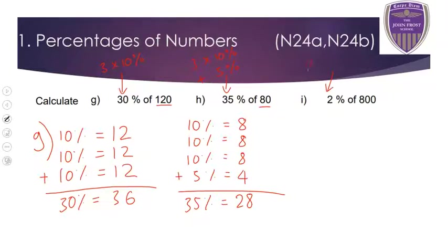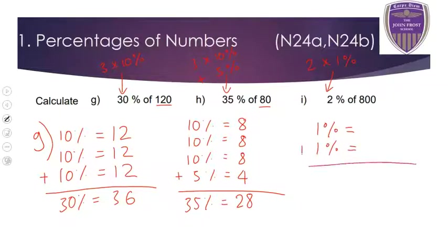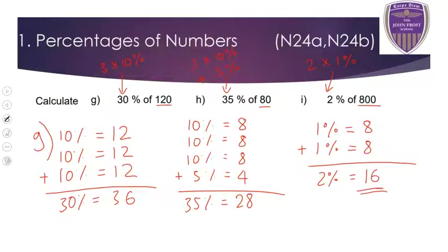For 2%, we do two lots of 1%. Remember, 1% is divided by 100 because there are 100 ones in 100. So do 1% first — 800 divided by 100 is 8. Another 1% is another 8, so 2% is 16. As long as we remember 50%, 10%, and 1%, we should be able to combine those to find any percentage we need.